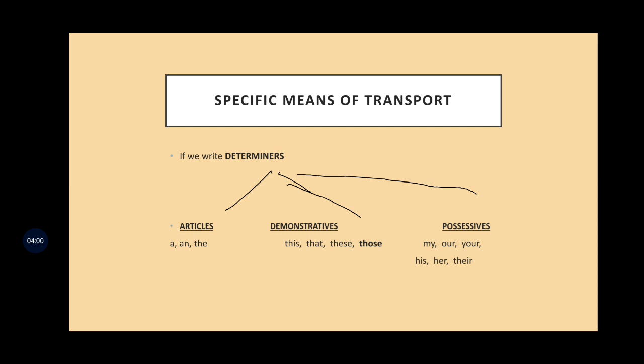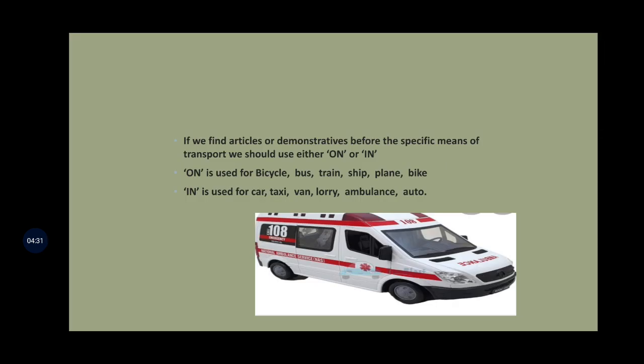Now for specific means of transport, before going further, you should know about some determiners. Articles, demonstratives, and possessives are the different determiners. Articles are a and the. Demonstratives are this, that, these, those. Possessives are my, our, your, his, her, their.